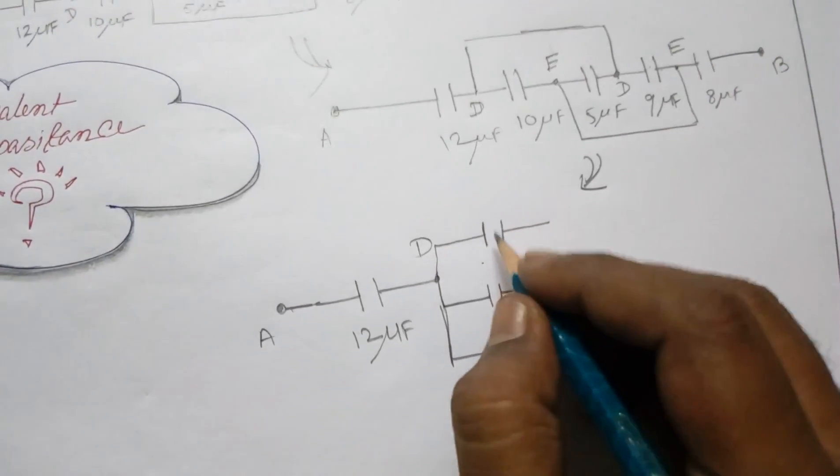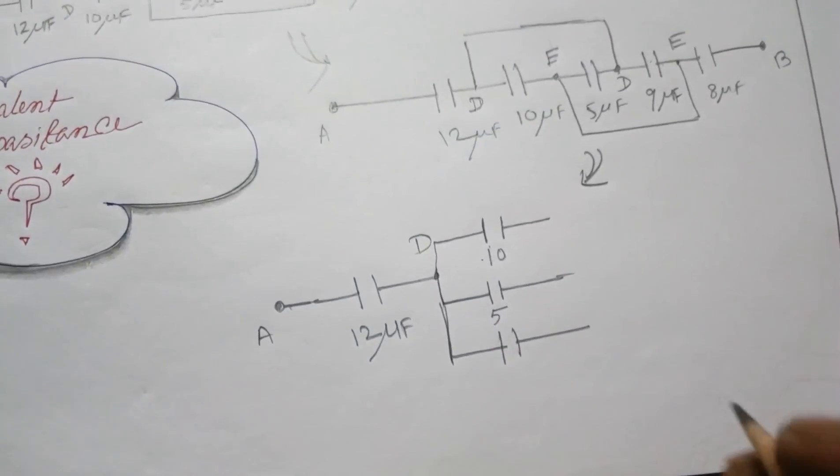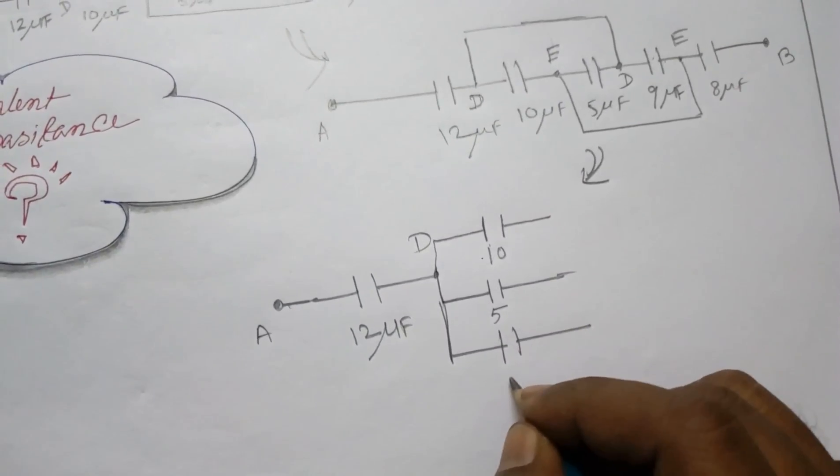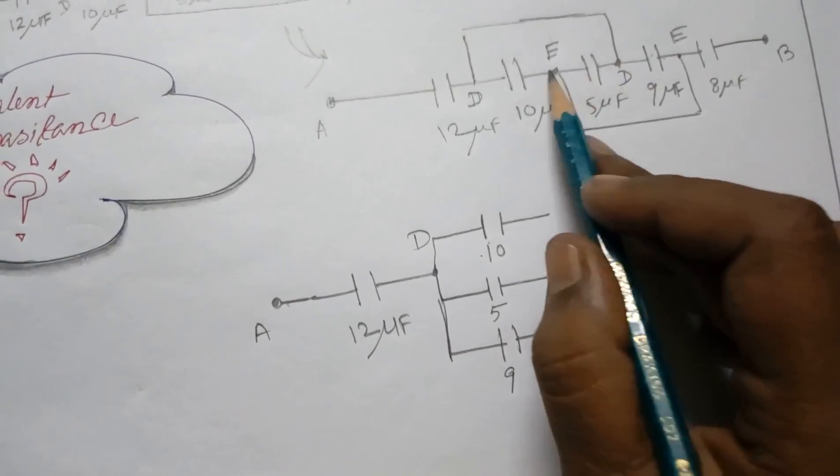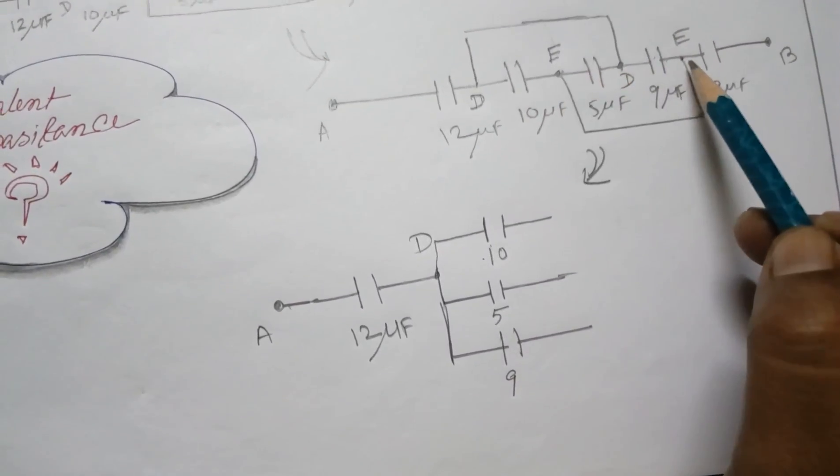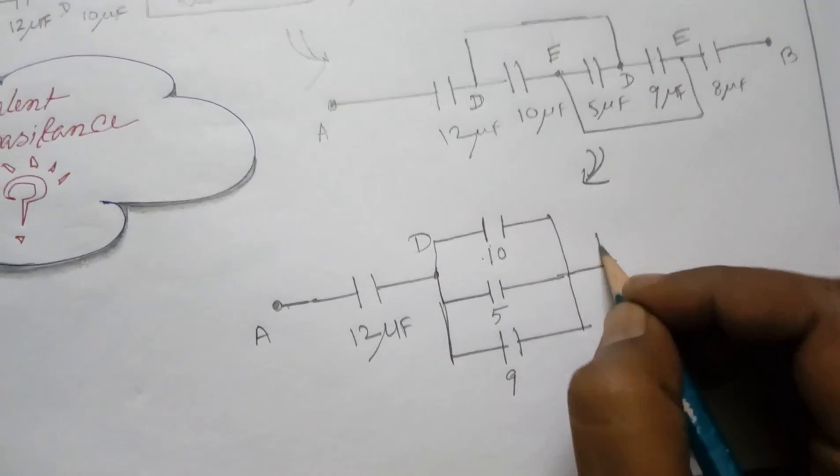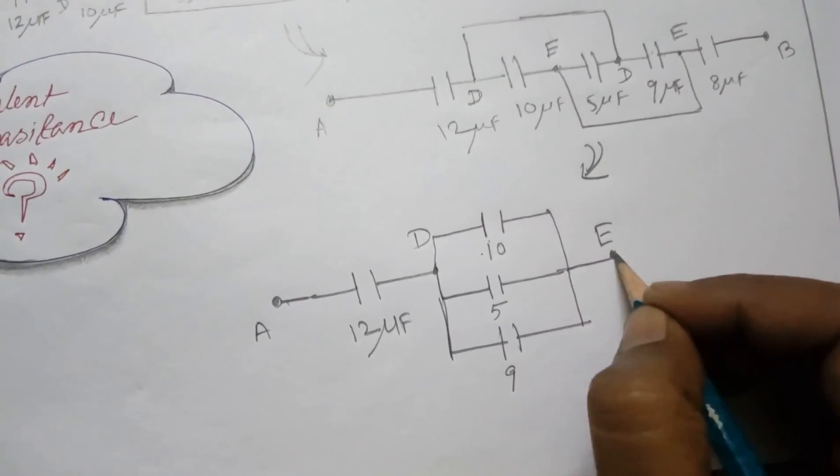We have 10, 5, 9. 5 is connected, 10 is connected, and 9 is connected. So we have E at that point. And from E, 8 microfarad started, and finally we have B.